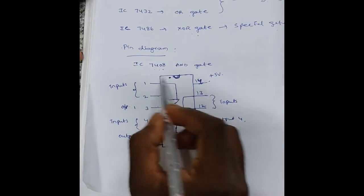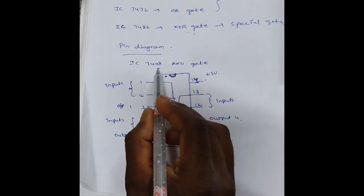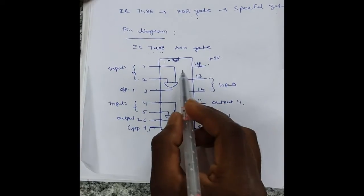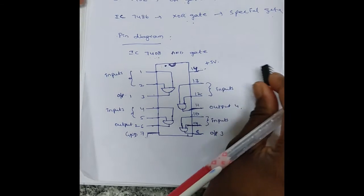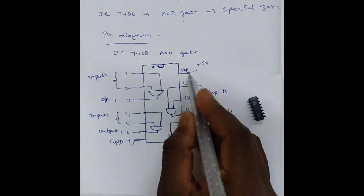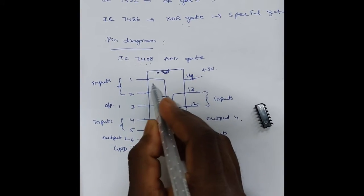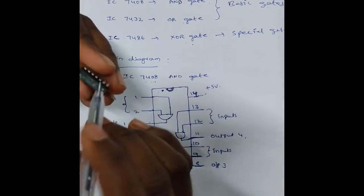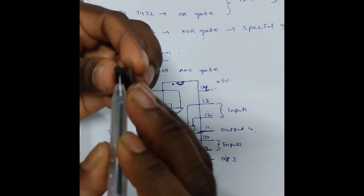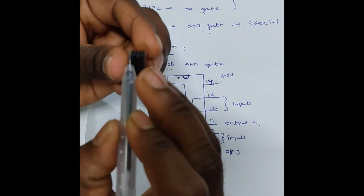Next, pin diagram of IC 7408 AND gate. This IC has a total of 14 pins. There is a notch on the IC. To the left of the notch, that is starting from pin 1.